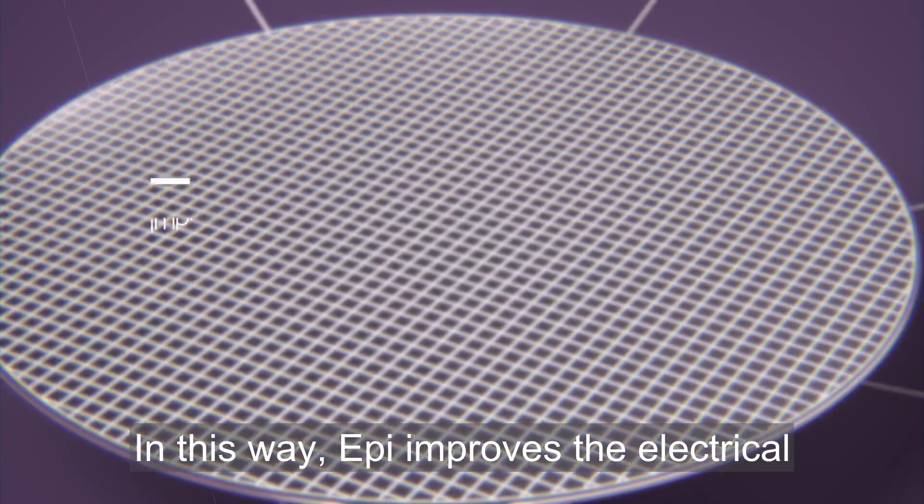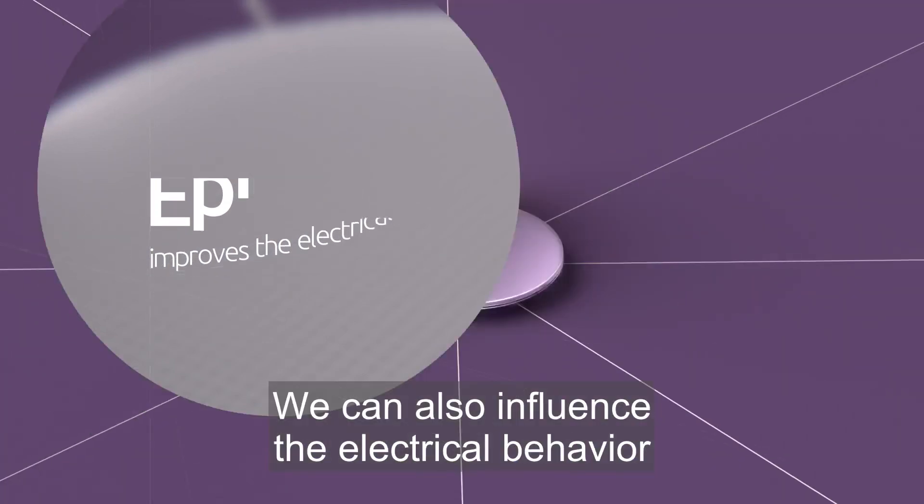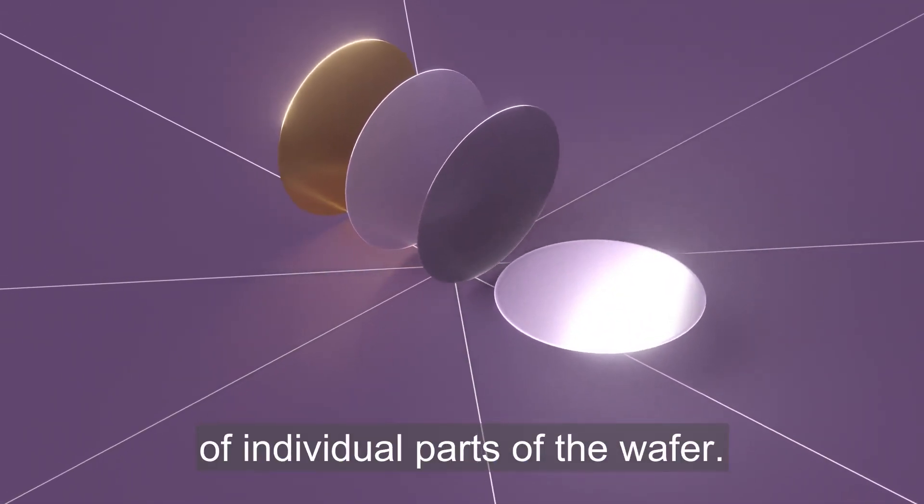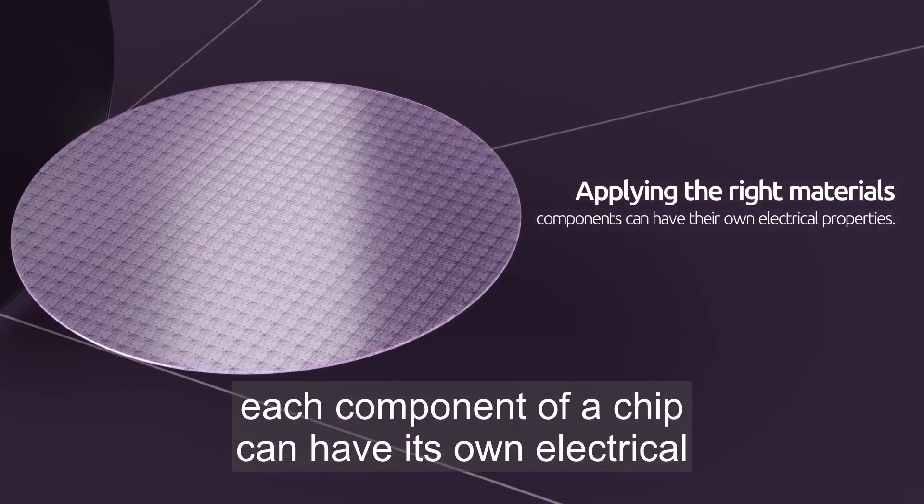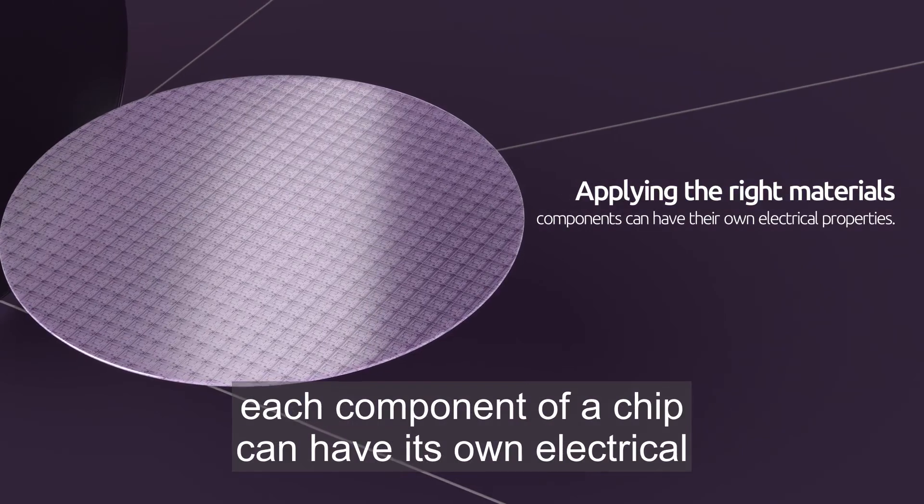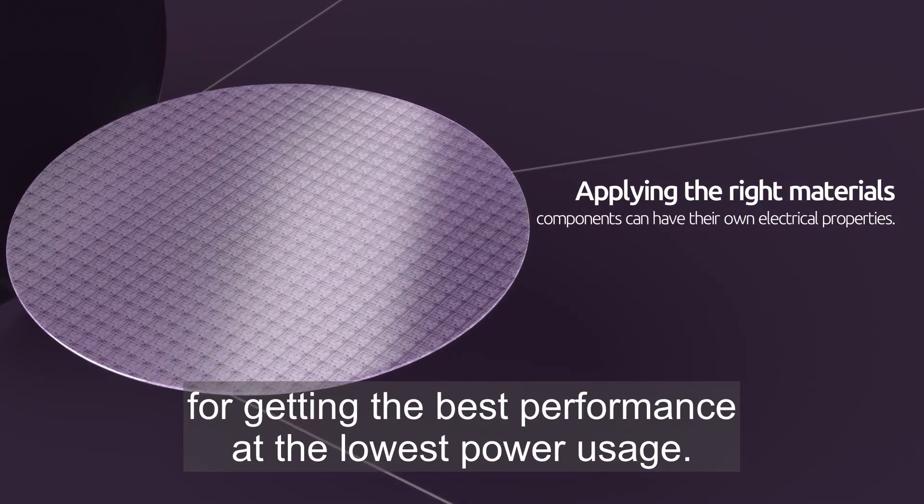In this way, Epi improves the electrical characteristics of the wafer. We can also influence the electrical behavior of individual parts of the wafer. By applying the right materials to different parts, each component of a chip can have its own electrical properties, which is critical for getting the best performance at the lowest power usage.